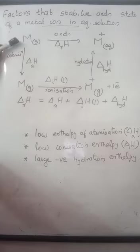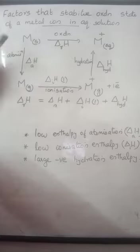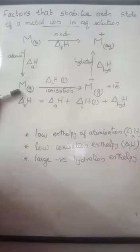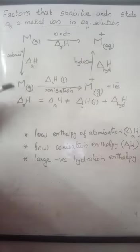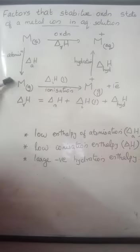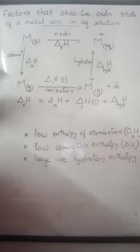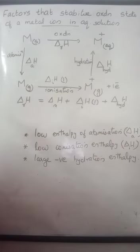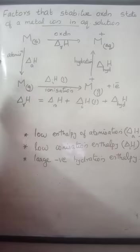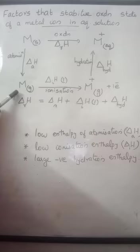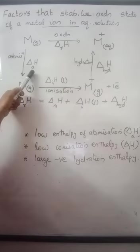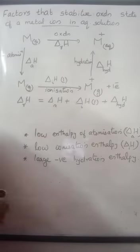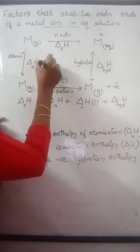First, the solid metal should break its lattice, should break its metallic bonding and form metal atoms in the gaseous state. This process of formation of metal atoms from a metal lattice is called atomization. For atomization, we need to break the bond between the metal atoms in the solid state. That amount of energy required to break one mole of a metal lattice into metal atoms in the gaseous state is called enthalpy of atomization, delta H_A. This process is always endothermic, meaning delta H_A will be positive.